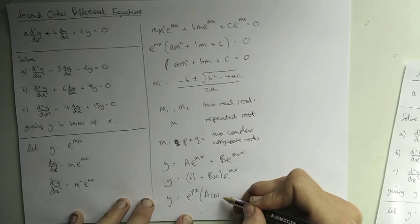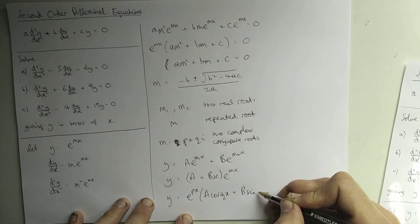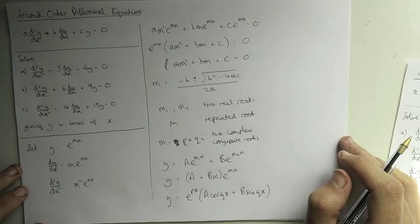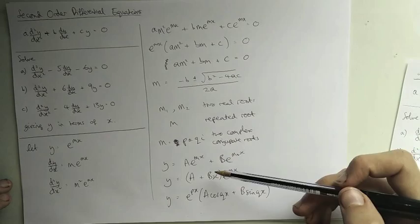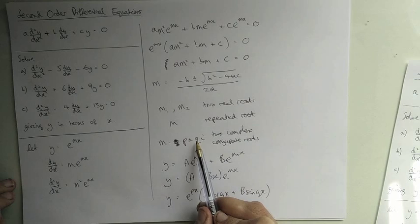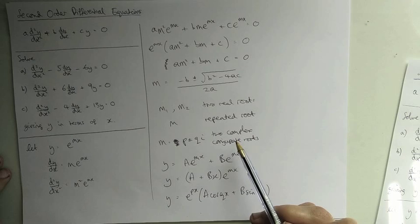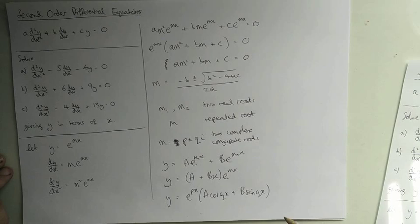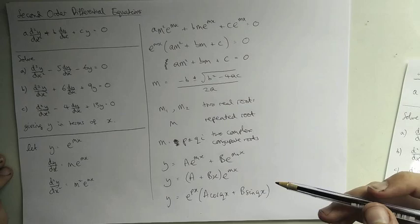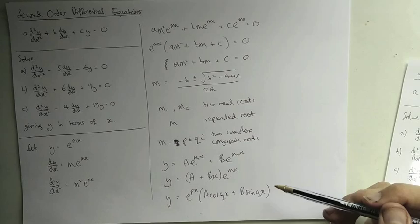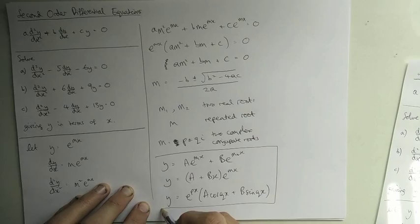If we have two complex conjugates p ± qi, the solution is y = e^(px) (A cos(qx) + B sin(qx)). This is normally the most confusing point. The cosines and sines come from Euler's formula: e^(ix) = cos x + i sin x. You don't need to derive it — you can just remember these three solution forms, and you'll be able to solve any of these second-order differential equations.